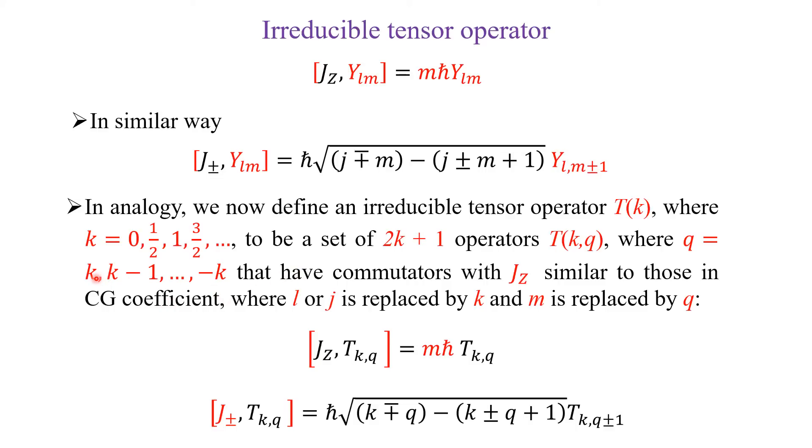That have commutator with J_z similar to those in Clebsch-Gordan coefficient, where l or J is replaced by k, and M is replaced by q. So, the commutation between J_z and T_{k,q} is equal to M ℏ T_{k,q}.